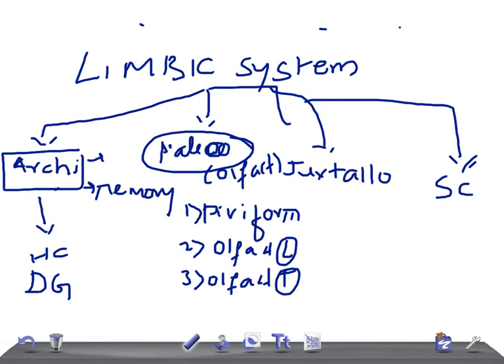The structures present here are cingulate gyrus of limbic cortex, and orbital insulo-temporal cortex (OIT).